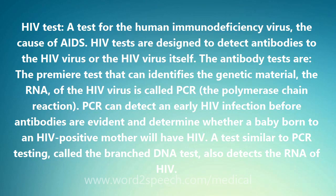The antibody tests, and the premier test that can identify the genetic material — the RNA — of the HIV virus is called PCR, the polymerase chain reaction. PCR can detect an early HIV infection before antibodies are evident and determine whether a baby born to an HIV-positive mother will have HIV.